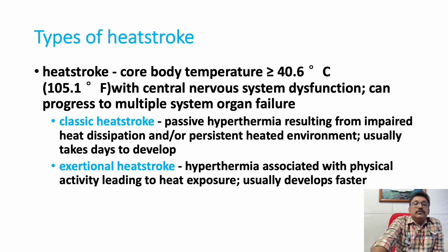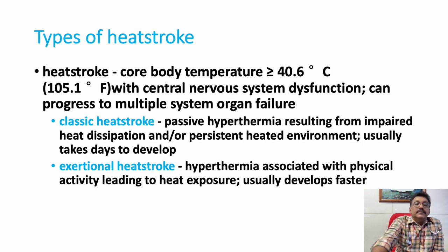There are two types of heat stroke. Classical heat stroke is passive hyperthermia resulting from impaired heat dissipation in a persistent hot environment, usually developing over many days. Exertional heat stroke is hyperthermia associated with physical activity in a high-temperature or high-humidity environment, and it usually develops faster than the classical variety.